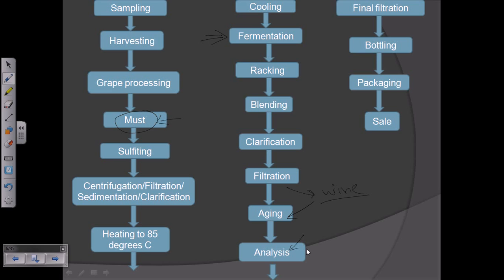After certain years of aging we need to analyze whether the wine is good or not, whether it can be drinkable or not. If it is drinkable we go through a final filtration, then bottling of the wine, then packaging, and then sell.